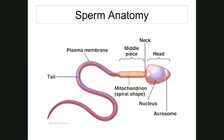A spermatozoon is a sperm cell produced by meiosis — a haploid sex cell containing half the full chromosome number. Diploid is 46 chromosomes; haploid is 23. Approximately 300 million sperm are produced per day, and they live approximately 48 hours in the female's reproductive tract.